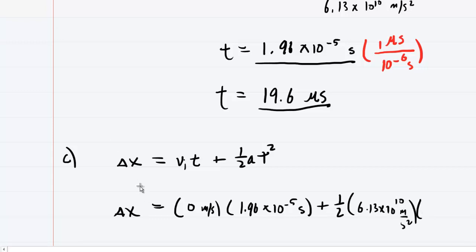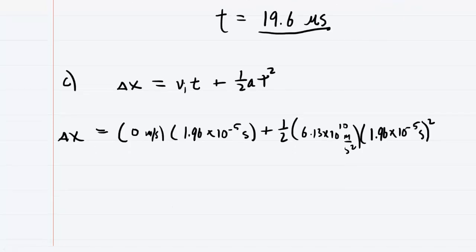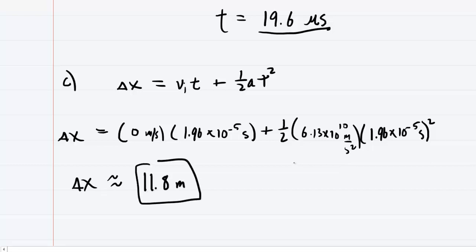And then the acceleration was that value of 6.13 times 10 to the power of 10. And then we're going to multiply by the time squared, and don't forget to square the time. And again, use the 1.96 times 10 to the minus 5 seconds here, and then square it. So let's punch this in and see what we get. We should get approximately 11.8 meters for the displacement. So that's how far this proton has traveled.